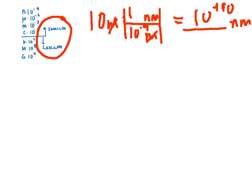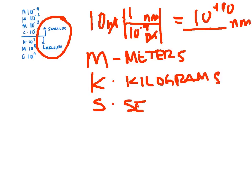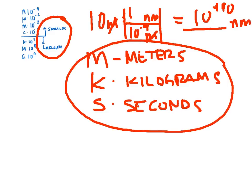In physics, we are very concerned with staying in the MKS system. The MKS system is meters, kilograms, and seconds. Every unit we use is going to be a combination of meters, kilograms, and seconds. Even a Newton — a Newton is a kilogram times a meter divided by seconds squared. It's a complicated unit that's still composed of just those three things. That is what we are after as far as unit conversion goes.